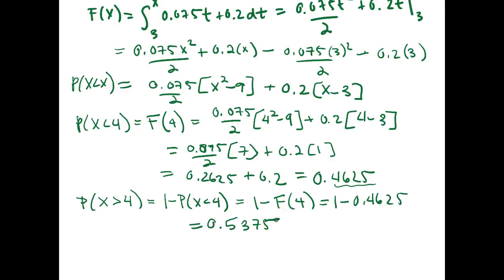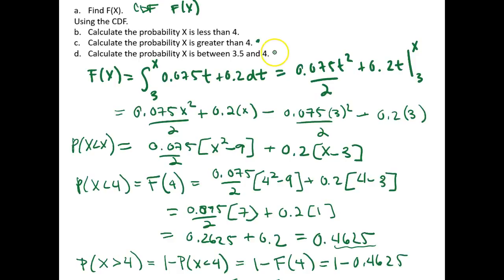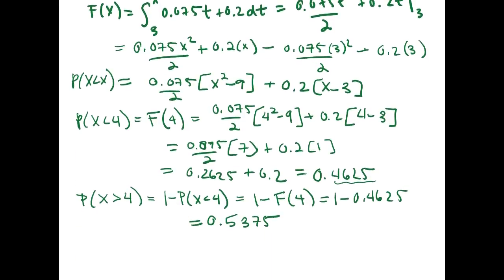We can manipulate probabilities to use the cumulative density function, which allows us to do less of the calculus work in continuous random variable problems. For part d, it asks us to calculate the probability that x is between 3.5 and 4. We could use calculus, but we're going to use the CDF instead.